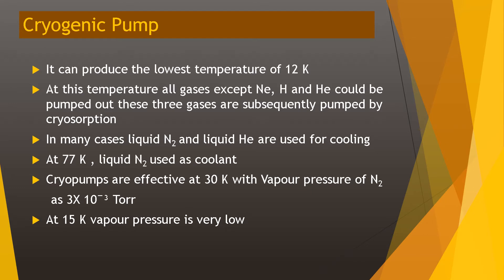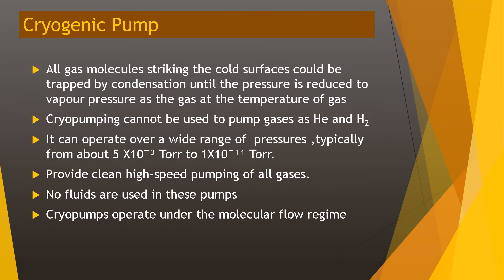At 15 K, the vapor pressure varies. All gas molecules striking the cold surface can be trapped by condensation until the pressure is reduced to the vapor pressure of the gas at that temperature. The cryopump can operate over a wide range of pressures, typically from about 5 × 10⁻³ Torr to 10⁻¹¹ Torr.